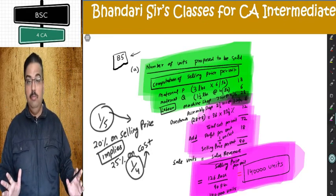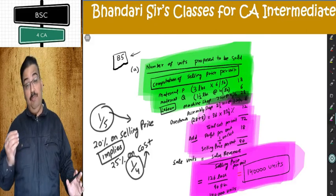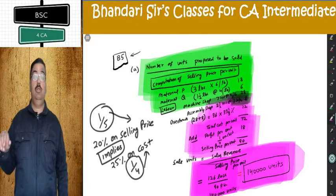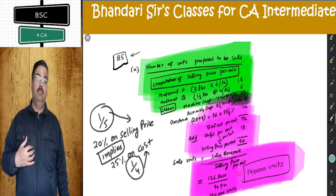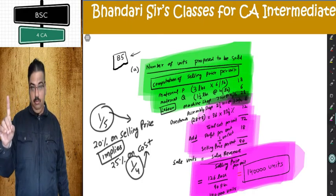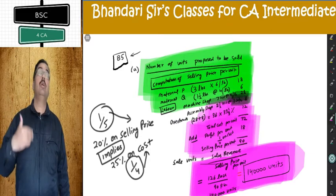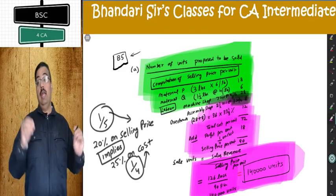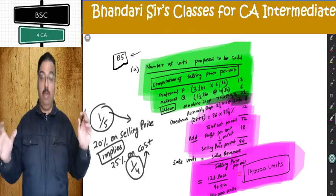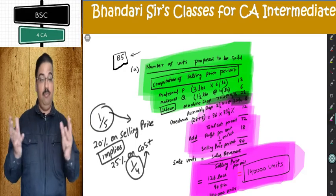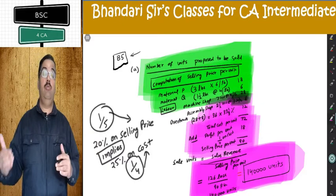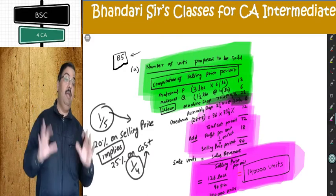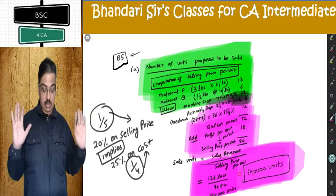The next part is similar to what you have done earlier. You've got sale — you want to reach purchase. From sale I will reach production; from production I will reach consumption; from consumption I will reach purchase. Once I get purchase quantity and apply the rate, I will get budgeted purchase cost. That is what B part wants. 1,40,000 units is the starting point.